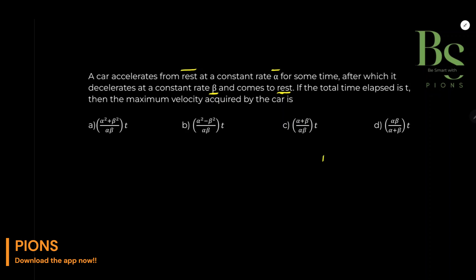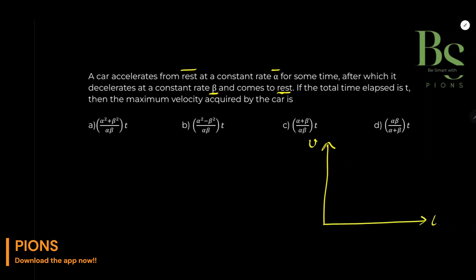पहले इसका एक छोटा सा graph बना लेते हैं समझने के लिए, कि कैसे particle चल रहा है। सबसे पहली चीज़, अगर वो यह velocity है हमारे पास और यह हमारे पास यहां पर time है।